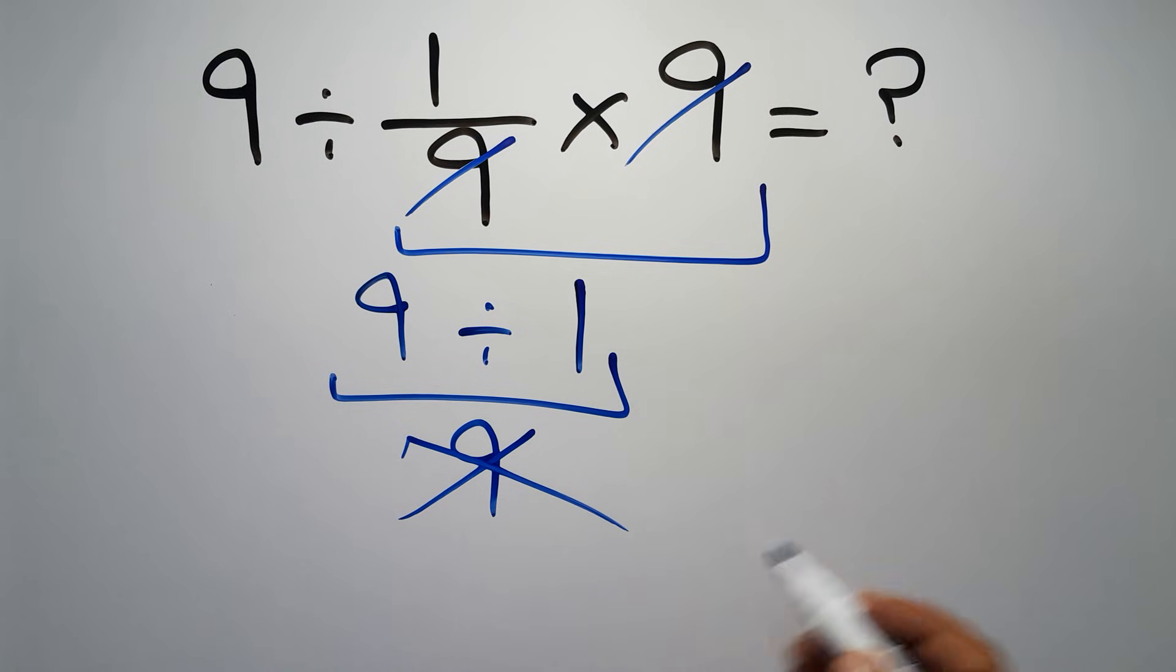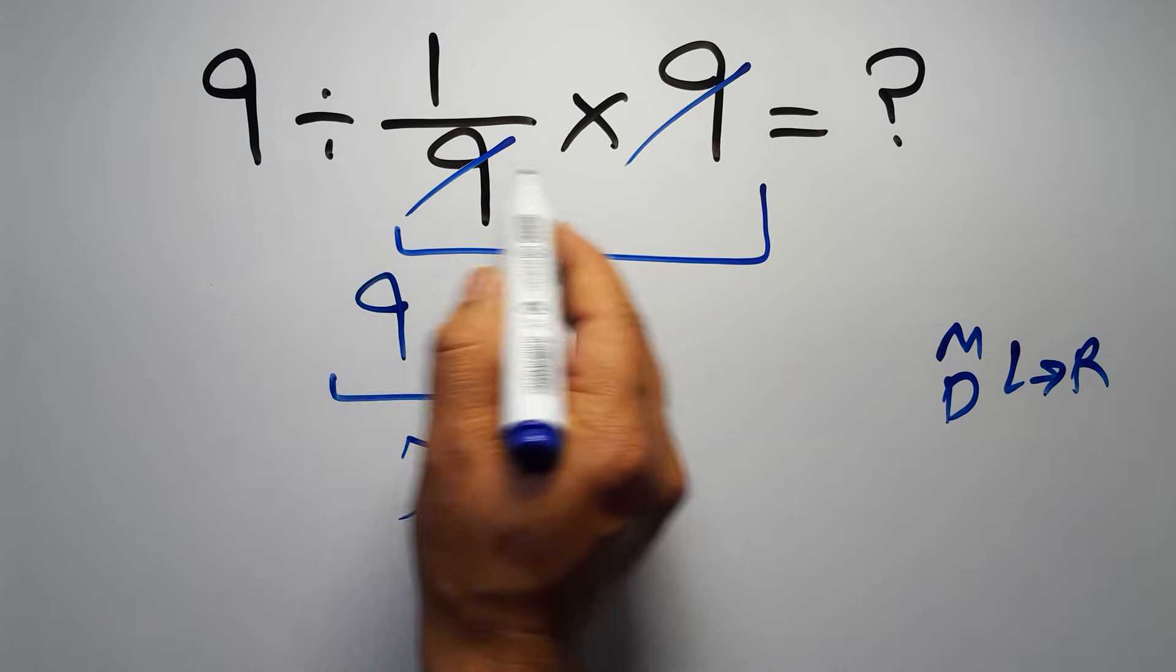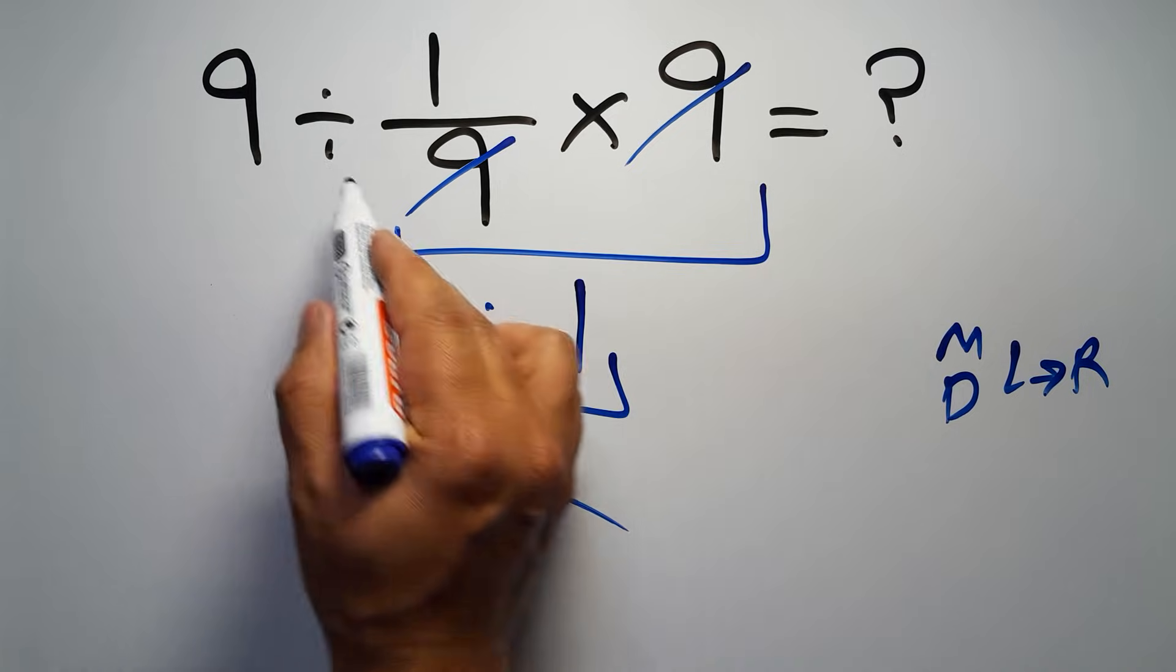According to the order of operations, multiplication and division have equal priority and we have to go from left to right. So here first we have to do this division, then this multiplication. If we do this multiplication before this division, it is wrong.